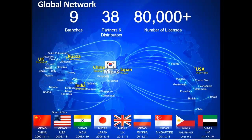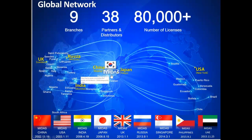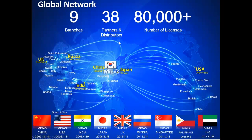Looking at the global network, our head office is in South Korea, in Seoul — a small country but with dynamic technology in engineering and electronics. We have nine branch offices: Midas China, Midas US, Midas India, Midas Japan, Midas UK, Midas Russia, Midas Singapore, Philippines, and also UAE. Apart from that, we also have 38 partners and distributors all over the world.